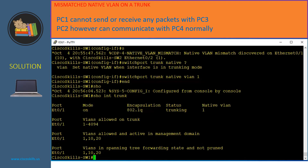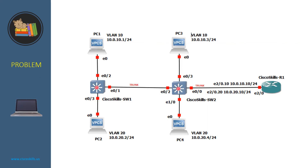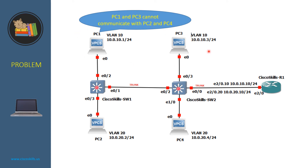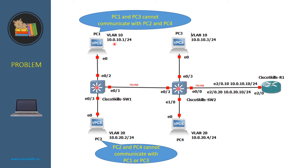In this problem, PC1 and PC3 cannot communicate with PC2 or PC4, so this is an inter-VLAN communication problem. For example, in order for PC1 to communicate with PC2, the traffic has to go to the router, and the router will forward the packet from PC1 to PC2. Let's troubleshoot this by verifying the configuration on Router 1.